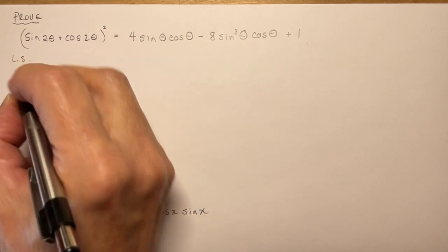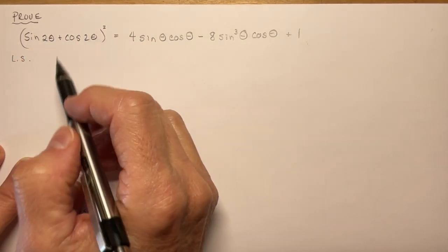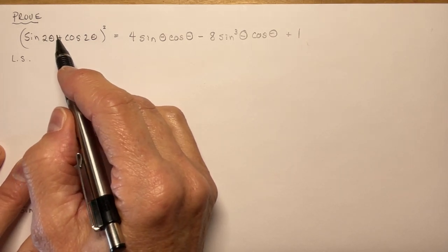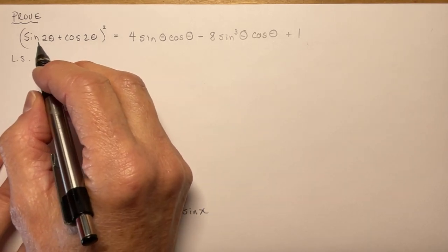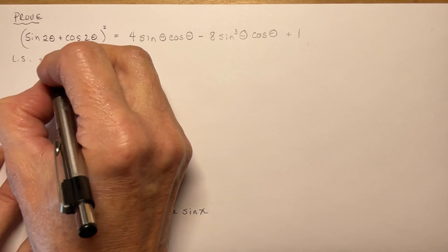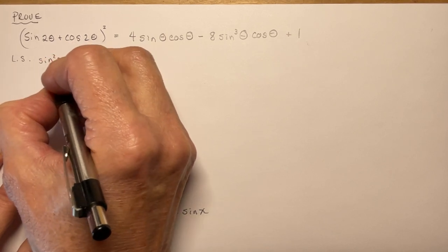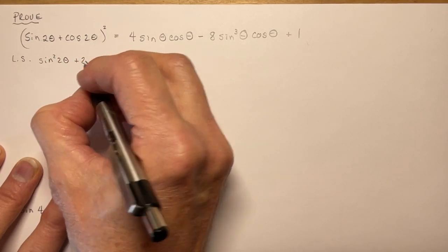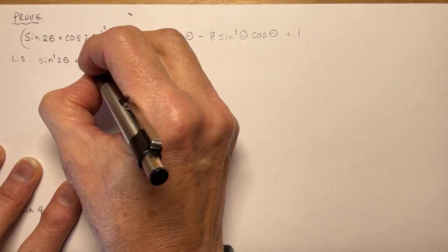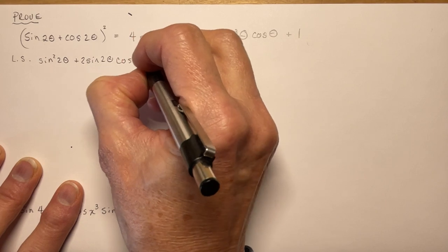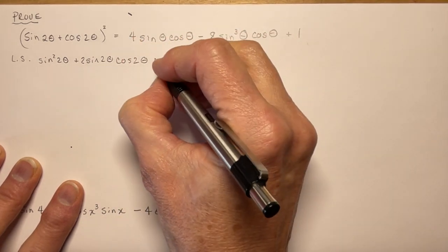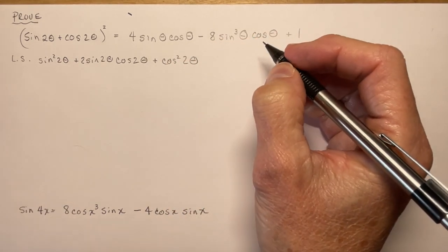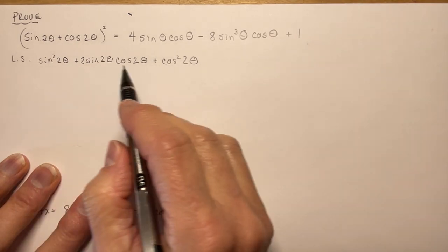I'm going to work with the left side. First, I'll expand the binomial. When you expand a binomial squared, you square the first term, add twice the product, and square the last term. So squaring the first term gives sine squared 2θ — remember you're only squaring the function, not the angle. Twice the product gives 2 sine 2θ cos 2θ, and squaring the last term gives plus cos squared 2θ.